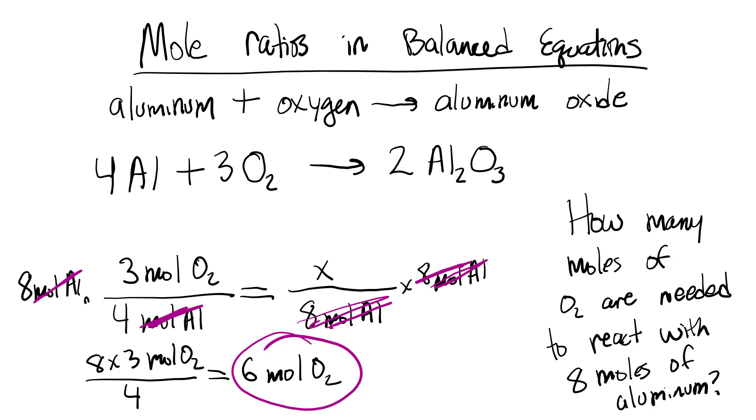And this makes sense because we have double the moles of aluminum that are in the equation. We have 8 moles of aluminum so that makes sense that we would have double the moles of oxygen required because we always are multiplying by the same number across the equation because that ratio must stay the same.